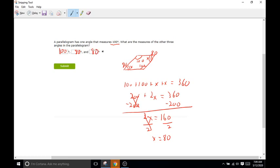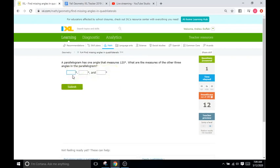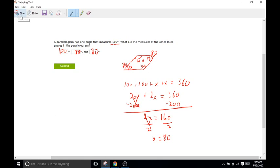So go back over here, do 100, followed by 80, followed by 80. Next, parallelogram has one angle that measures 120 degrees. What are the other three angles? So it's the same logic as this last time right here.